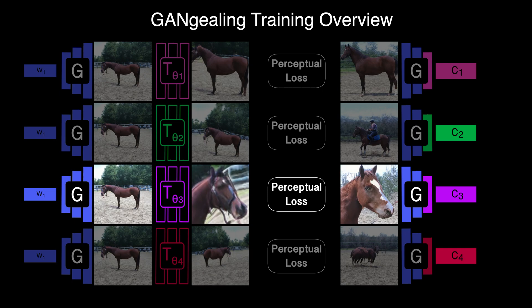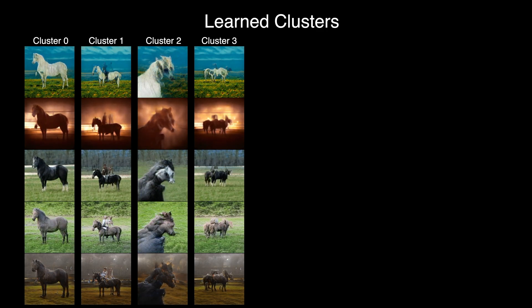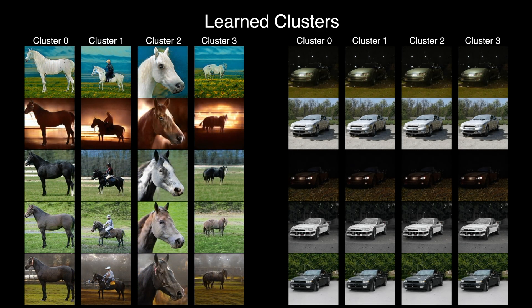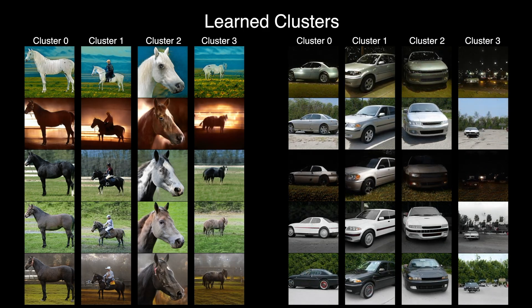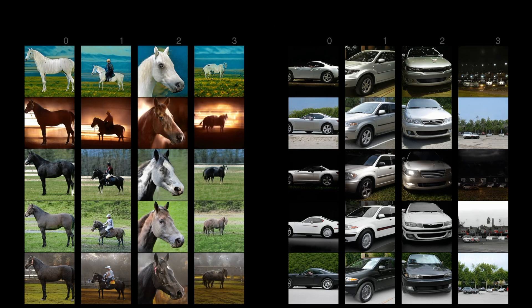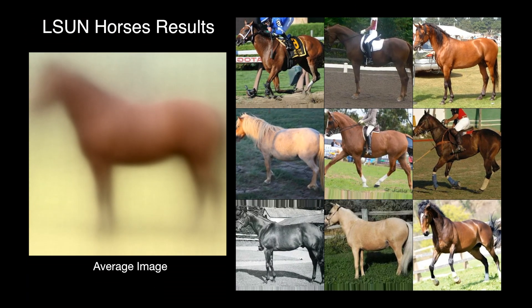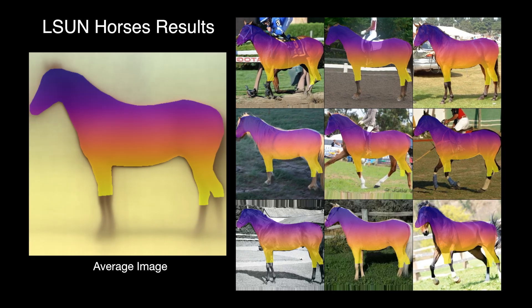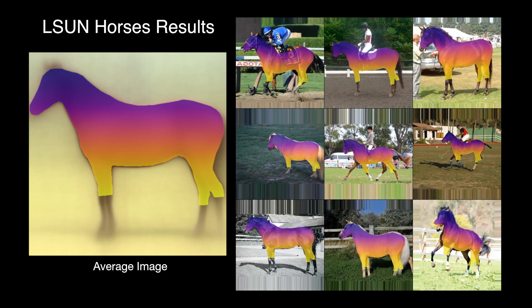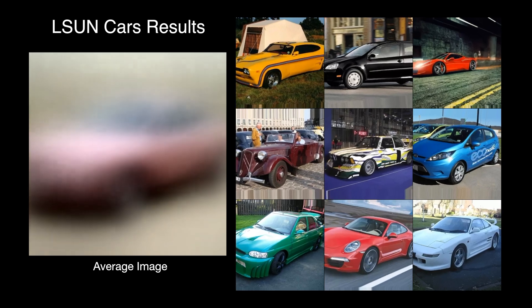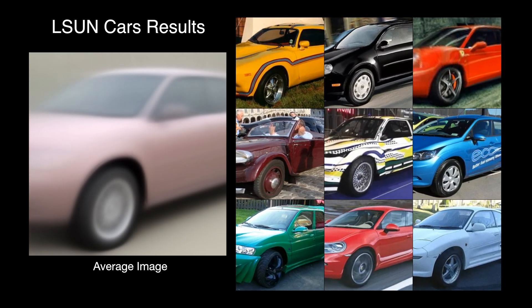We use this clustering variant of GANGEALING for ELSEN horses and cars, with four learned clusters each. We use the K-means++ initialization algorithm to select starting latents, and here we show the target images generated using the truncation trick — clearly a really bad template, especially for ELSEN horses, showing that you can't rely on the truncation trick to provide a good template. Here are our four learned clusters at the end of training and results for ELSEN cars, where clustering essentially partitions 3D space to make the spatial transformer's job as easy as possible. One cluster for ELSEN cars can handle some amounts of out-of-plane rotation.